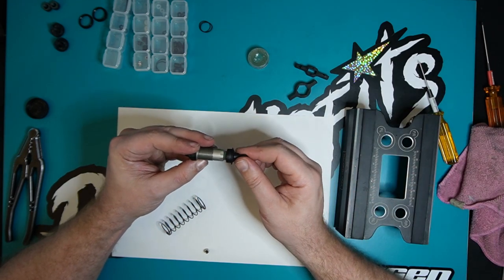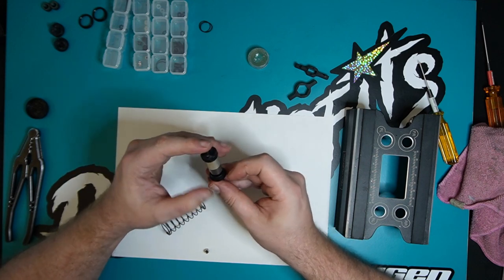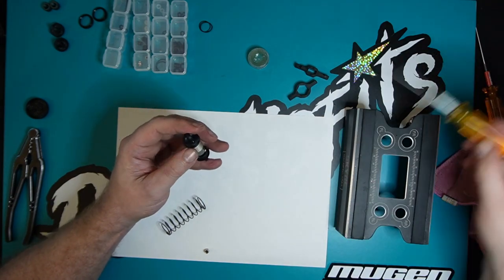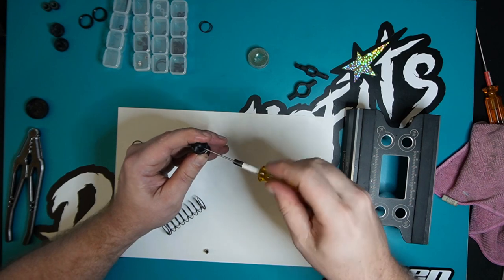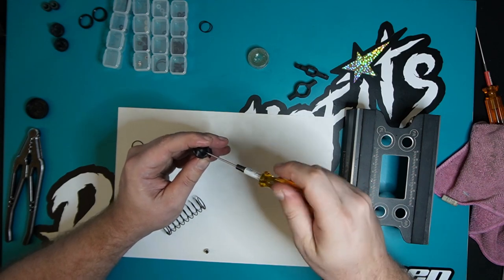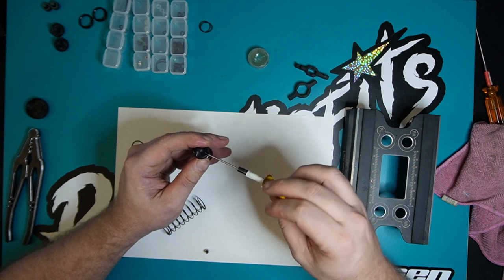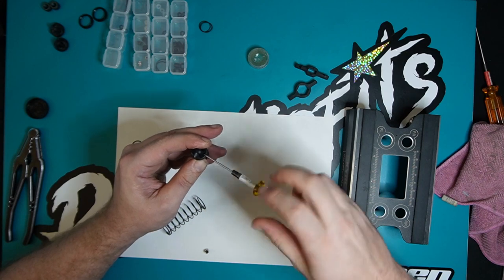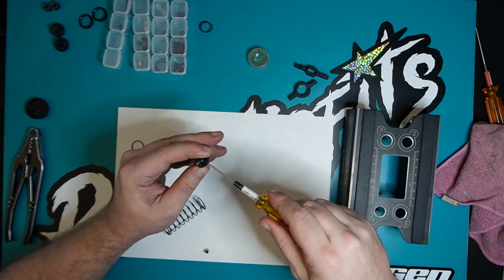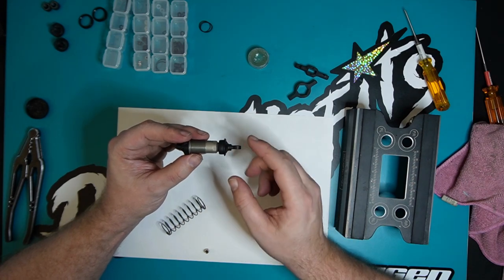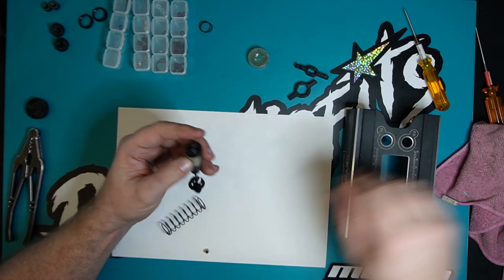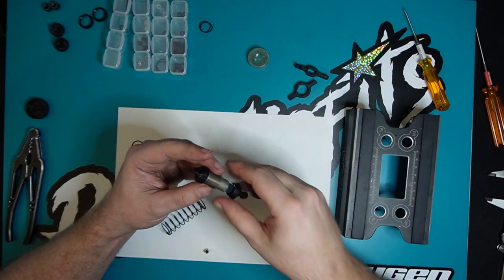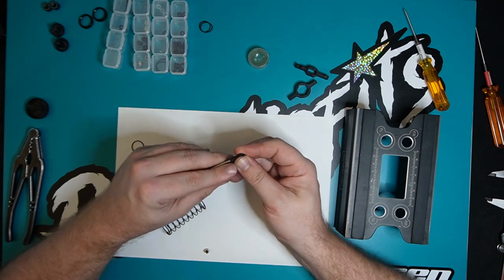Now you should have a fairly dead shock with a little bit of bounce in it. There you go, no bounce. Get rid of that little jug of oil and remove the spring seat.